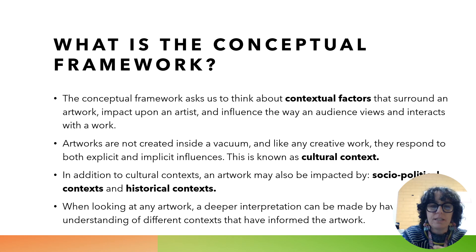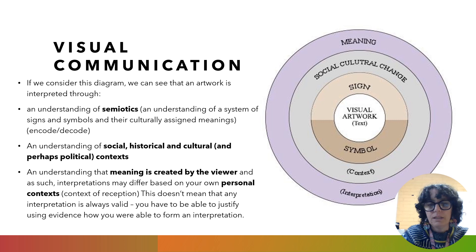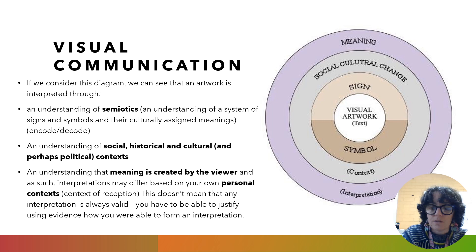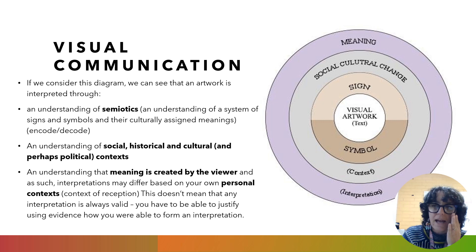When looking at any artwork, a much deeper interpretation is going to be made by having an understanding of the context that has informed the production of that work. It's important to have an understanding of the theory of visual communication. If we consider this diagram, we can see that there are several layers to making an interpretation. At the very centre of this diagram is the visual work — in our case an artwork — but it could be any visual text: anything visual that communicates an idea, such as posters, film, television, adverts, and so on.